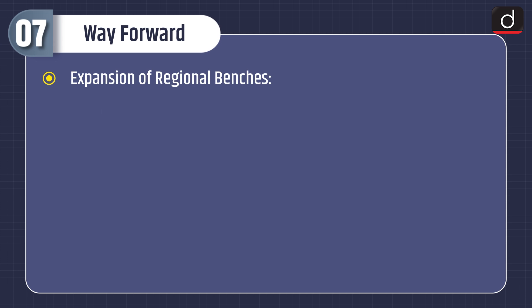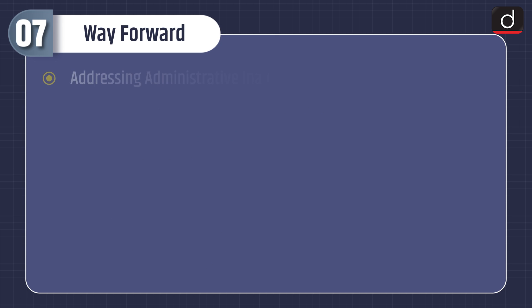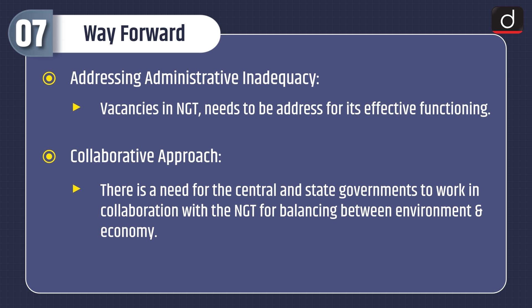Now moving on to way forward. First is expansion of regional benches — NGT benches have to expand many folds, and these new regional benches should be based in places that have the highest forest cover or large mineral deposits. Second is a system of larger bench in NGT — appeals may be provided against the order of the NGT before a larger bench of the tribunal before the matter reaches the Supreme Court or High Court. Third, addressing administrative inadequacy — vacancies in NGT need to be addressed for its effective functioning. And fourth, a collaborative approach — there is a need for the central and state governments to work in collaboration with the NGT for balancing between environment and economy.